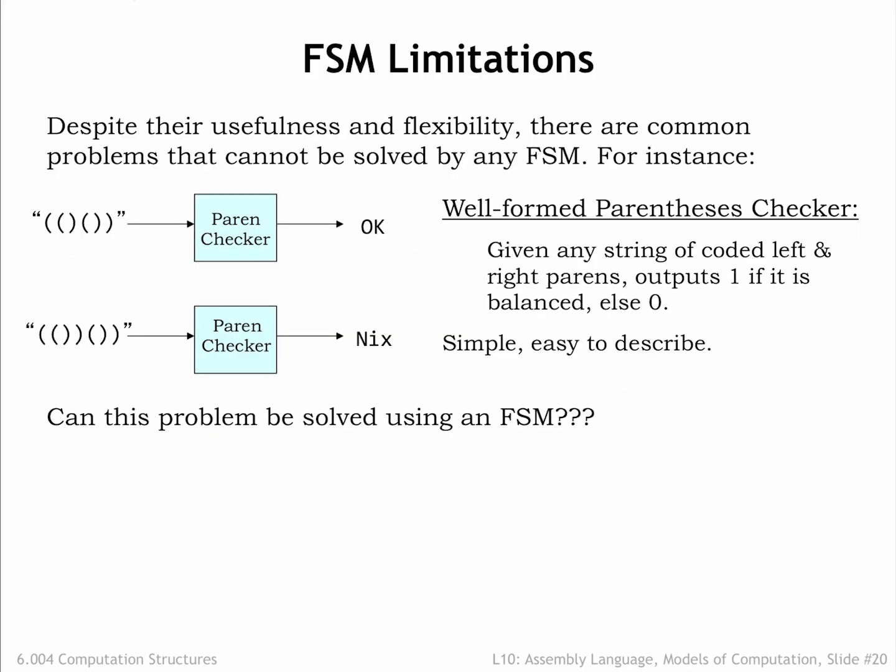Despite their usefulness and flexibility, there are common problems that cannot be solved on any FSM. For example, can we build an FSM to determine if a string of parentheses properly encoded into a binary sequence is well-formed? A parentheses string is well-formed if the parentheses balance — for every open parenthesis there is a matching close parenthesis later in the string. In the example shown here, the input string on the top is well-formed, but the input string on the bottom is not. After processing the input string, the FSM would output a 1 if the string is well-formed, 0 otherwise. Can this problem be solved using an FSM?